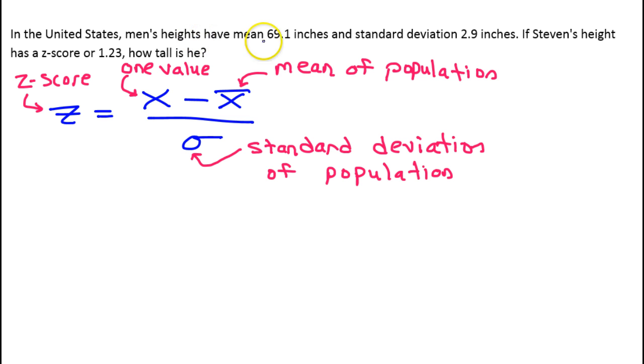So men's heights have a mean of 69.1 inches. Alright, so that's the mean, so it's going to go right here in the formula. Alright, minus 69.1. The standard deviation is 2.9, so that's going to go right here, 2.9 inches.